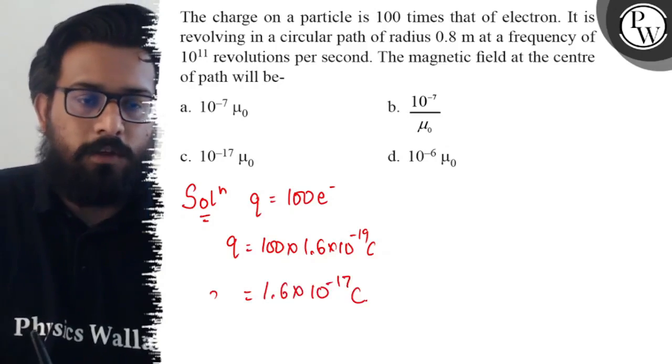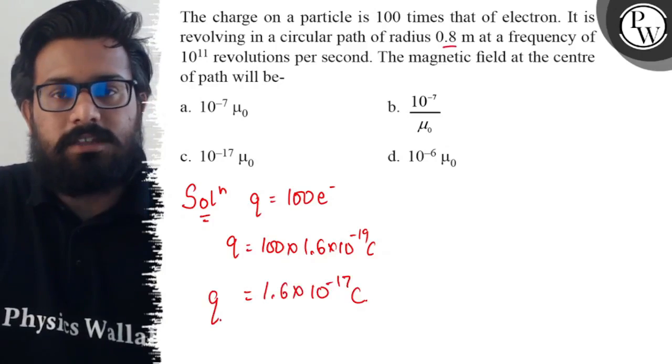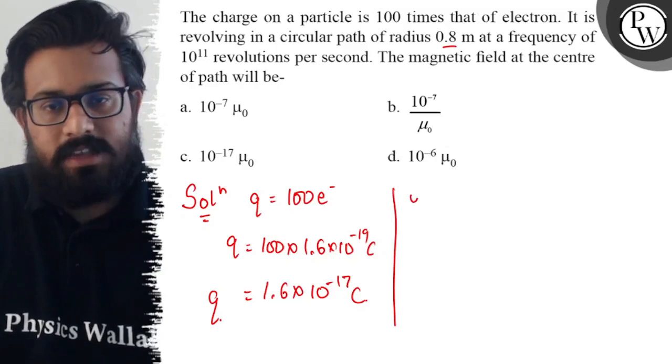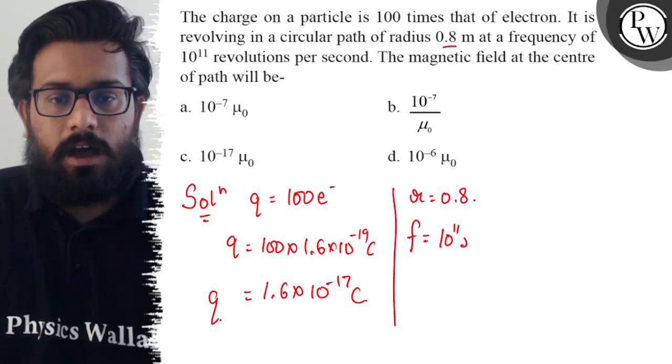So we have the value of charge now. The charge is revolving in a circular path of radius 0.8 meter. Frequency is also given as 10^11 rps. And I have to find the value of magnetic field at the center.